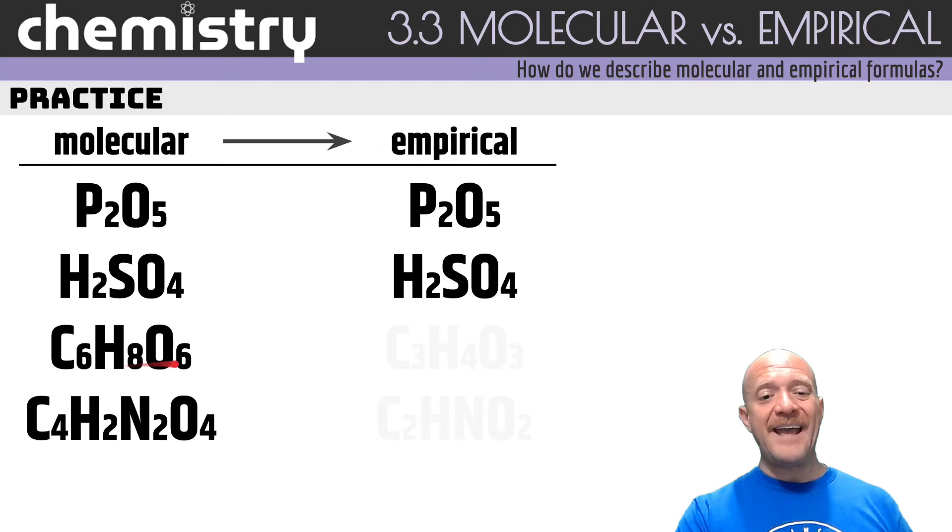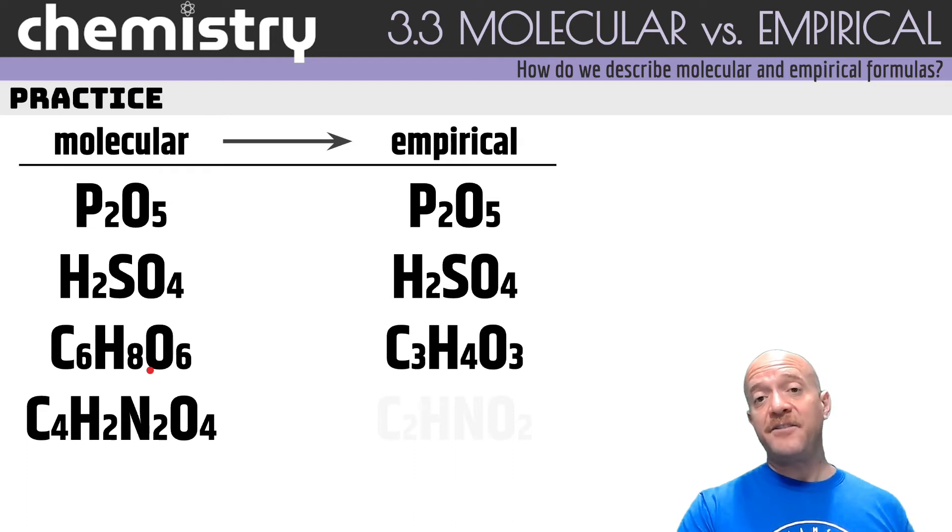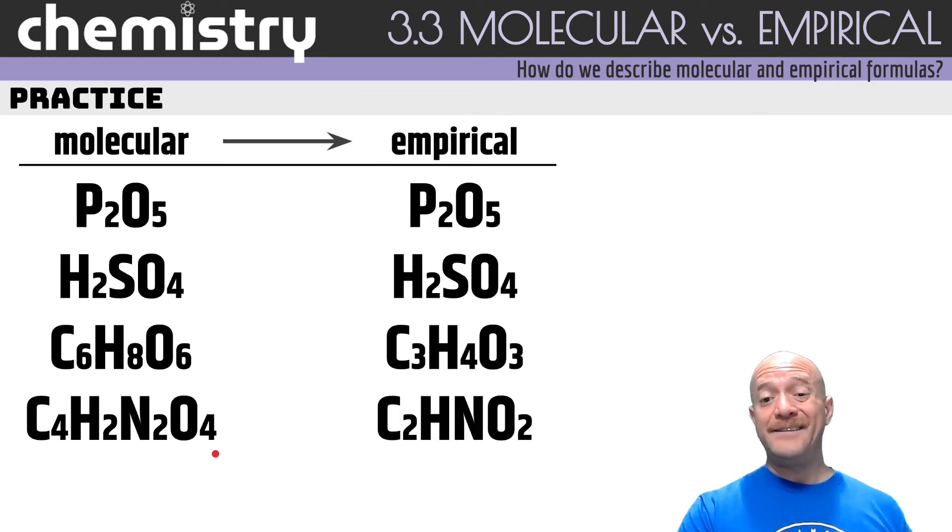C6H8O6, well we can't divide by 8, we can't divide by 6, but we could divide by 2. So that's C3H4O3. And the last one, C4H2N2O4, we divide by 2, we have C2HNO2.